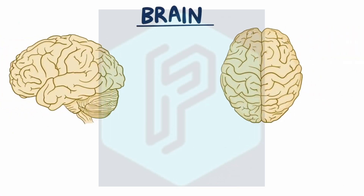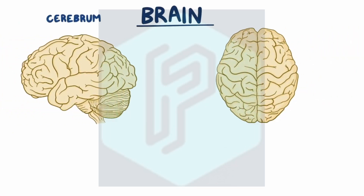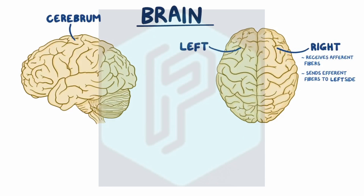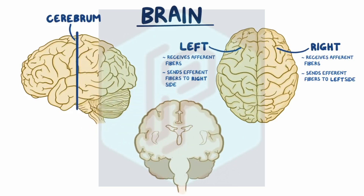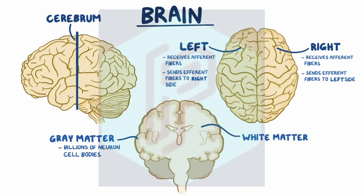The brain has a few regions. The most obvious is the cerebrum, which is divided into two cerebral hemispheres. The right cerebral hemisphere receives afferent fibers and sends efferent fibers to the left side of the body, while the left cerebral hemisphere does the opposite. In a cross-section of the cerebrum, the outermost area is the gray matter, or cerebral cortex, made up of billions of neuron cell bodies, and the innermost area is the white matter, made up of axons from all those neurons.